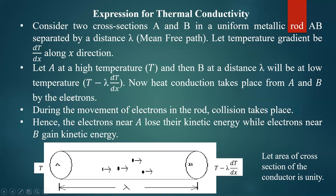Heat conduction takes place from point A to point B because heat always flows from a higher temperature region to a lower temperature region. A is at temperature T and B is at temperature T minus lambda times dT/dx. During the movement of electrons in the rod, collisions take place and transfer kinetic energy from one electron to another. This is an elastic collision, so the total kinetic energy is conserved. Hence electrons near A lose their kinetic energy while electrons near B gain kinetic energy, and this kinetic energy transfer is what causes heat transfer.